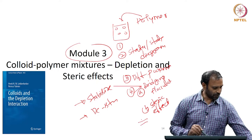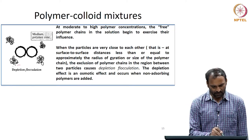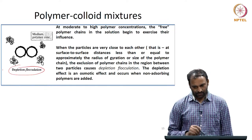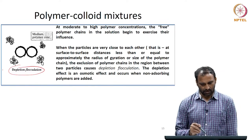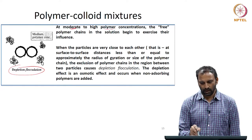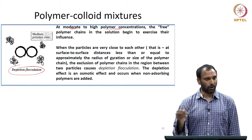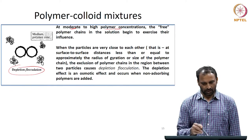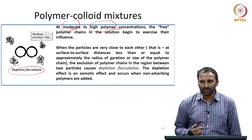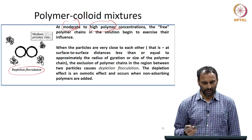We will continue further with an important concept called depletion flocculation. Depletion flocculation can occur at moderate to high polymer concentration. That means I have a dispersion of particles and I have added polymers, and if the concentration of the polymers is moderate to high — these are very general terms that depend on the type of particle-polymer system you are dealing with.